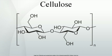Cellulolysis is the process of breaking down cellulose into smaller polysaccharides called cellodextrins or completely into glucose units. This is a hydrolysis reaction. Because cellulose molecules bind strongly to each other, cellulolysis is relatively difficult compared to the breakdown of other polysaccharides. However, this process can be significantly intensified in a proper solvent, such as an ionic liquid.